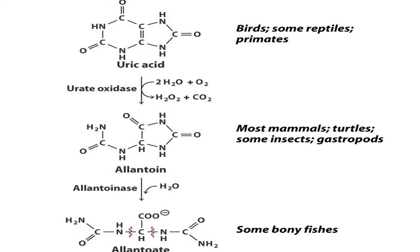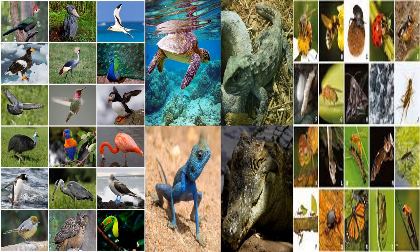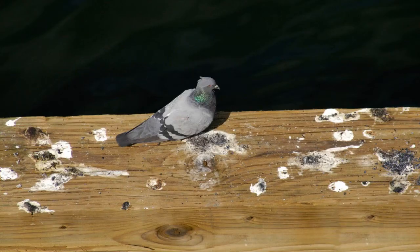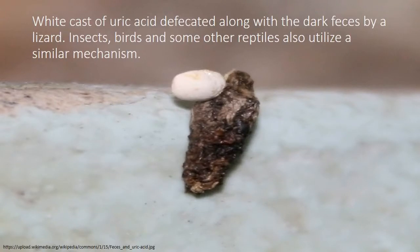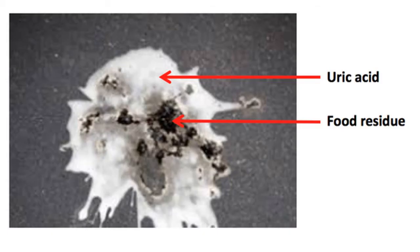Finally, organisms that excrete uric acid are grouped as uricotelic animals. These include insects, birds and most reptiles. Though requiring more metabolic energy to make than urea, uric acid is low in toxicity and low in solubility in water. This allows it to be concentrated into small volumes of pasty white suspension compared to the liquid urine of mammals.